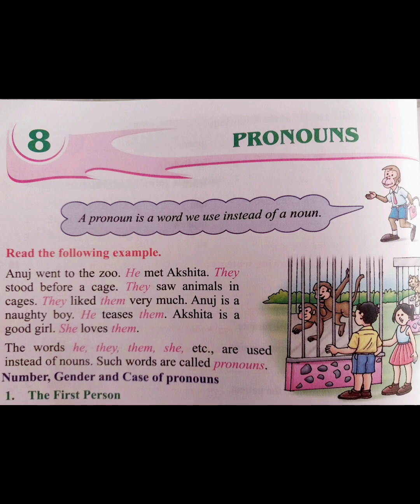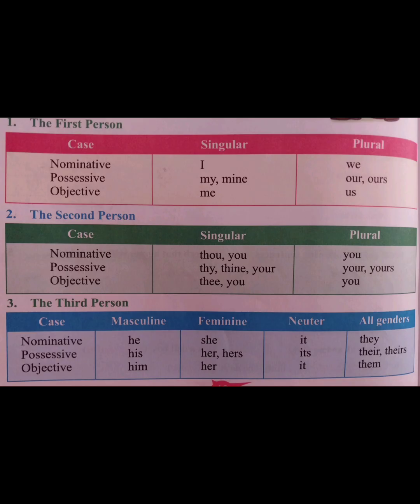Number, gender, and case of pronouns. Let's see it in first person. First person, nominative case. Nominative case is the naming case used for the subject of the sentence. The pronoun used here is 'I' in singular form and 'we' in plural form.